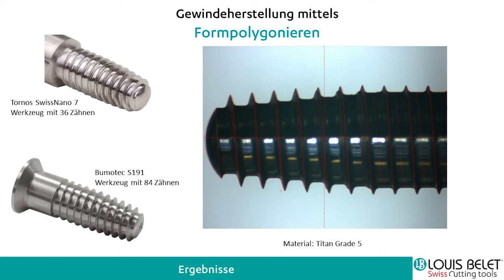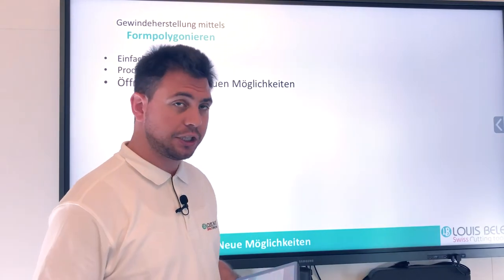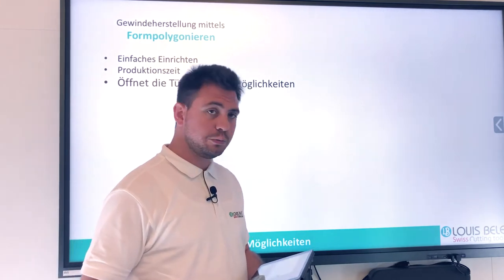Die Gewindeherstellung mittels Formpolygonieren – dieses Wort habe ich vom Französischen übernommen, im Deutschen habe ich in der Fachliteratur nichts gefunden, welches diese Operation beschreibt. Somit ist das ein Louis-Belle-Wort. Was bringt das für Vorteile? Einfaches Einrichten: wie Sie gesehen haben, haben wir viel weniger Programmieraufwand, und das Programmieren dieses Fräsers ist sehr einfach. Auch das Einrichten des Werkzeugs ist relativ einfach – sauberes Arbeiten ist sehr erwünscht, also Planlauf und Rundlauf unbedingt messen.